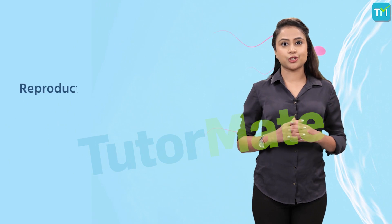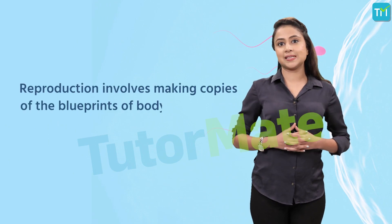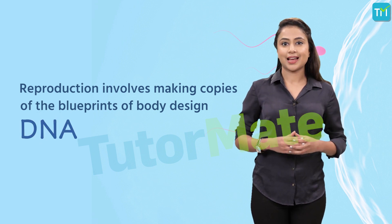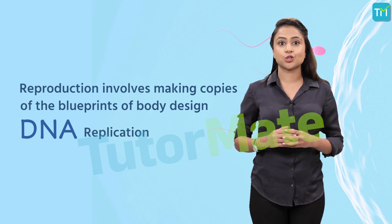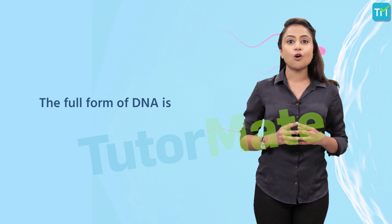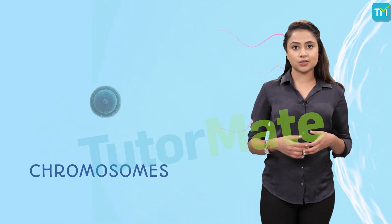These similarities are possible because a mechanism of production of similar copies of the same blueprint is involved. Thus, the process of reproduction involves making copies of the blueprints of body design. This blueprint is contained in the organism's DNA. So DNA copying, or DNA replication, is the mechanism responsible for the production of similar copies of the blueprint in living organisms. Now let's dig a little deeper into how DNA copying exactly happens. The full form of DNA is deoxyribonucleic acid.